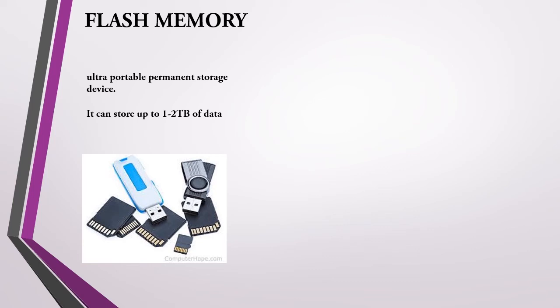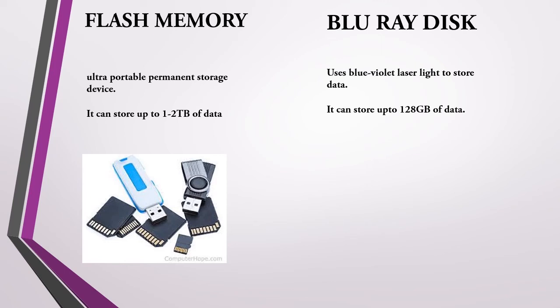The fifth storage device is the Blu-ray disk, also known as Blu-ray or BD. It is an optical disk storage media format device that uses blue-violet laser light to store data, whereas DVD and DVD RAM use red laser to read and write data. Blu-ray disk uses blue-violet laser, which allows data to be packed more tightly and stored in less space. A Blu-ray disk can store up to 128 gigabytes of data.